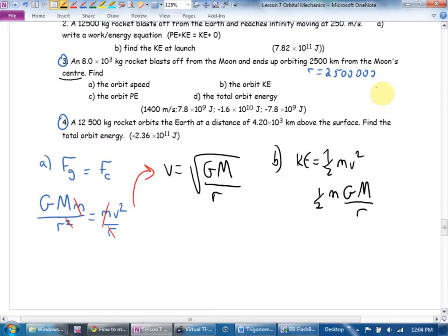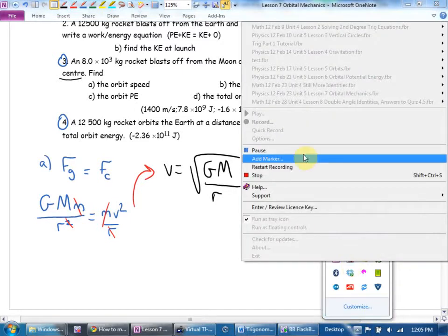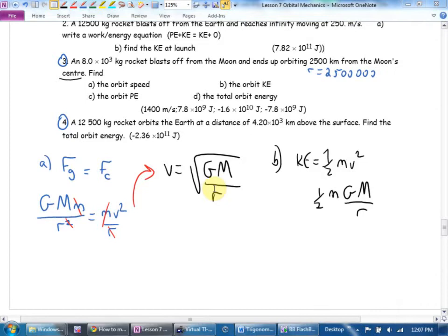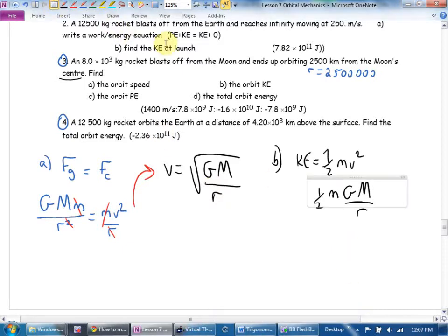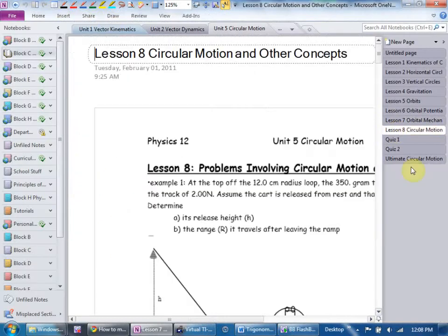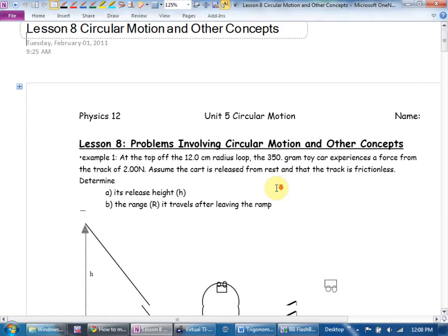So today is kind of wrapping everything up. I have a take-home quiz for you guys first. The take-home quiz has no gravitation stuff on it. It's actually lessons 1, 2, and 3, where we looked at the kinematics of circular motion, horizontal, and vertical circles. What we're going to be doing today, lesson 8, is looking at some neat examples that combine energy and circular motion and other concepts.